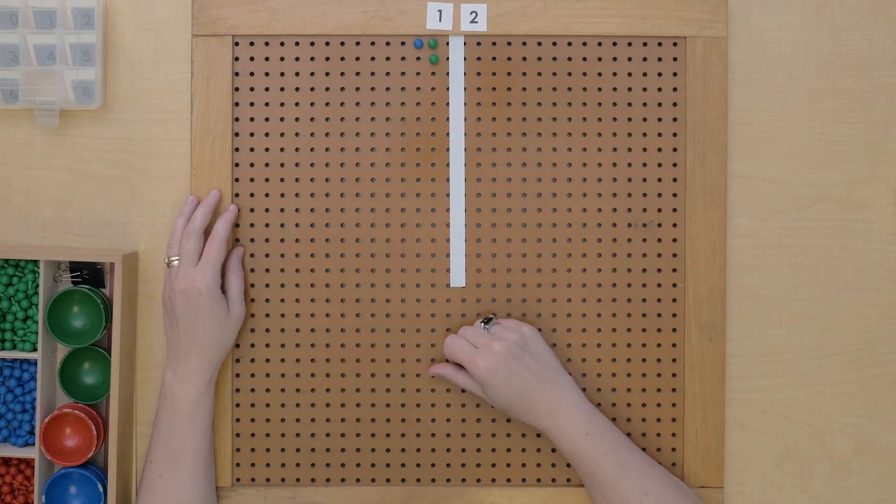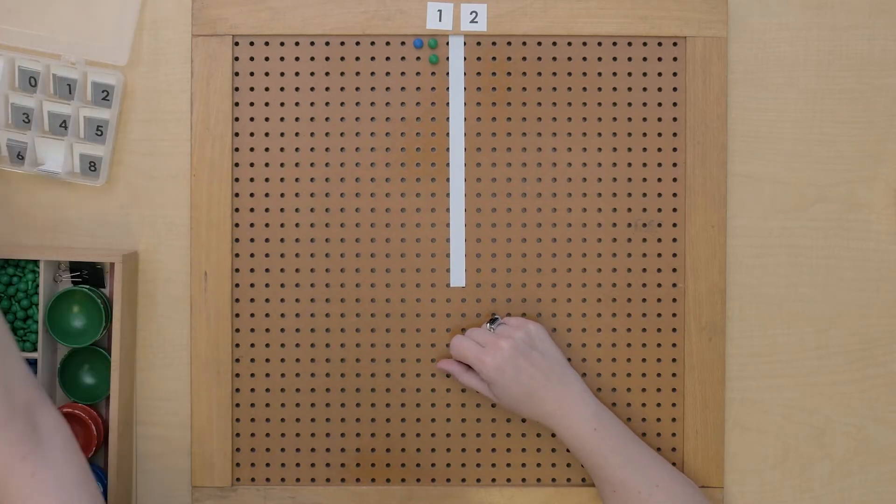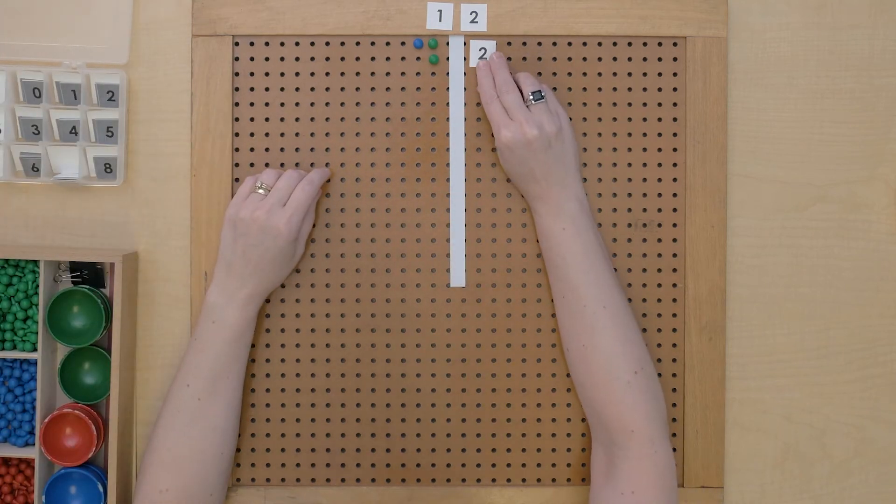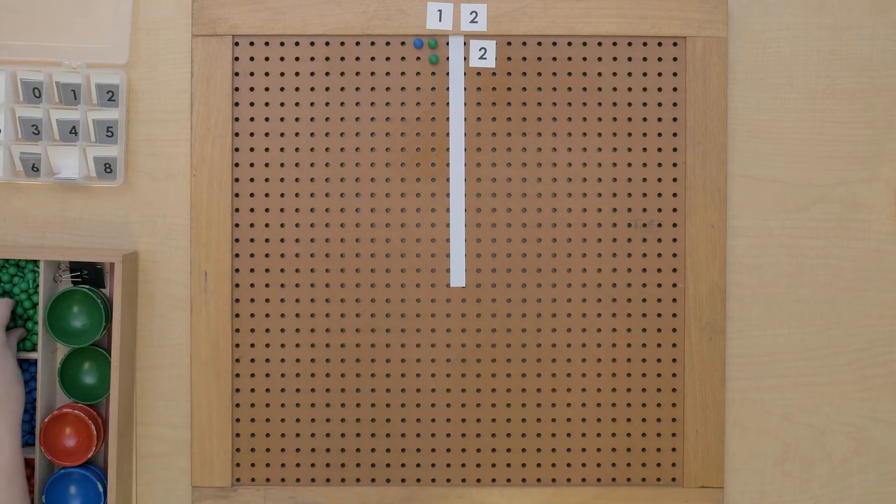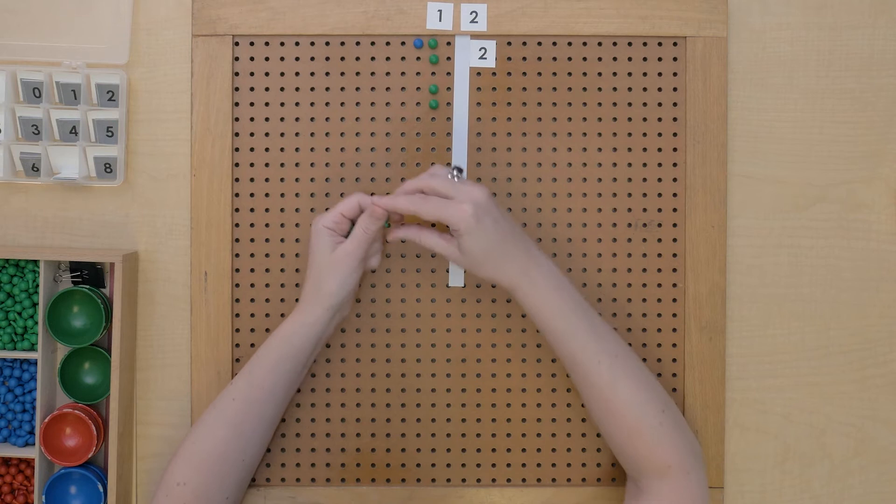Could I make groups of 2 out of 12? I could. So let's put 2 over here. We know we can make groups of 2 and we'd have 6 groups of 2 if we did that. So let's put 6 over here.